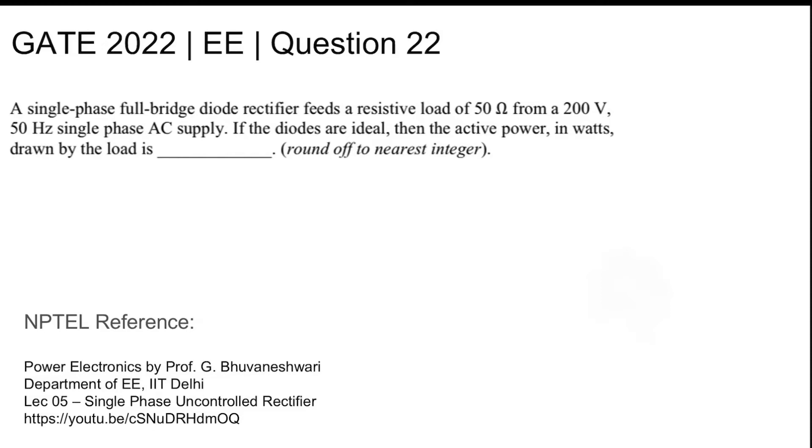Electrical question number 22: A single-phase full-bridge diode rectifier feeds a resistive load of 50 ohms from a 200 volt, 50 hertz single-phase AC supply. If the diodes are ideal, then the active power in watts drawn by the load is